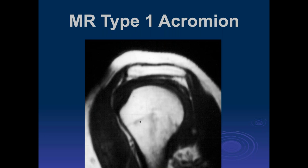The three types of acromion were classically described in the outlet plain film projection radiography—believed to be by Bigliani's group in New York. On MRI, I prefer oblique sagittal images, which is similar but not identical to the plain film outlet classification. Bigliani believed type 1 had very low risk for impingement, type 2 intermediate risk, and type 3 high risk. I believe types 1 and 2 have very little risk, and type 3 has increased risk.